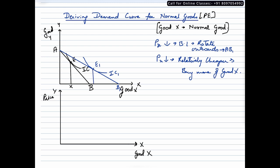let us say OX1 quantity of good X. From our previous videos, we should be knowing that when we join these two equilibrium points, we get the PCC curve, which is the price consumption curve. Now this video was